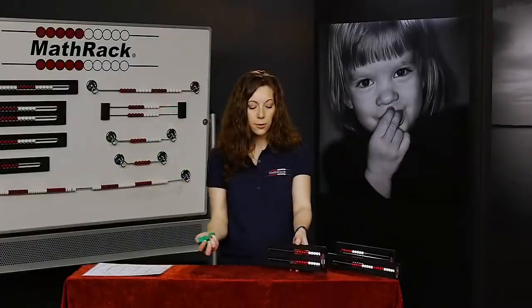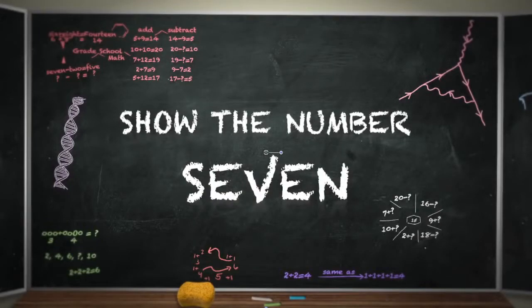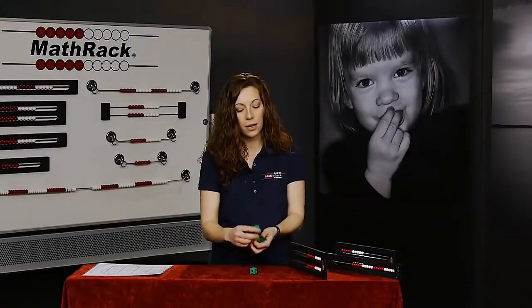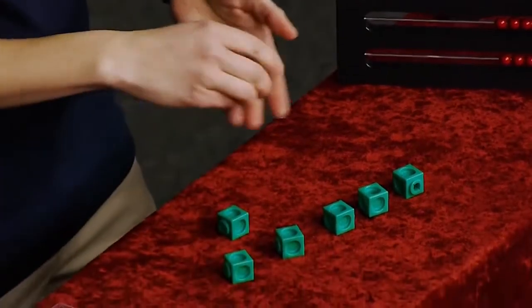So if we have these cubes and we're asking a student to show the number 7, when they're showing 7, they count out 1, 2, 3, 4, 5, 6, and 7.